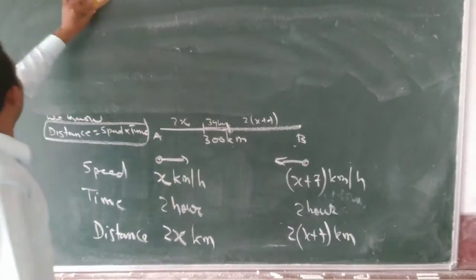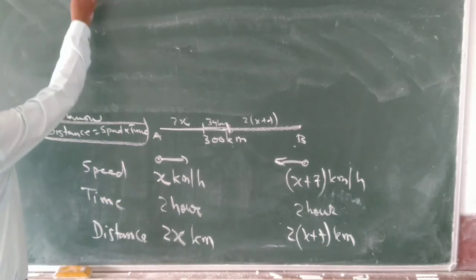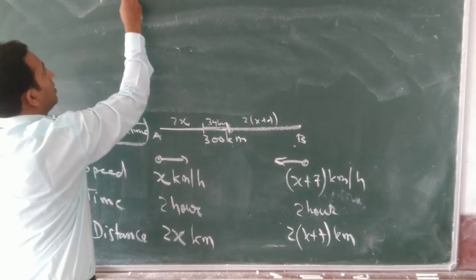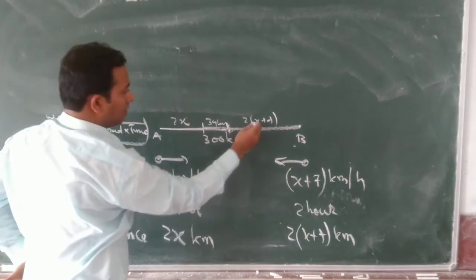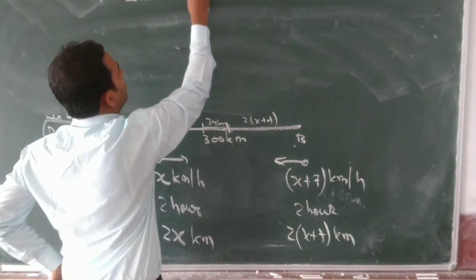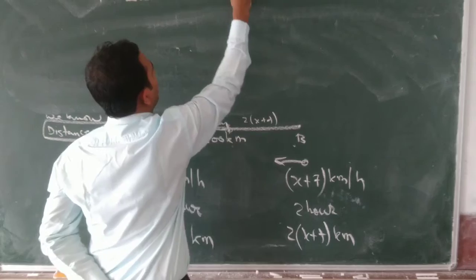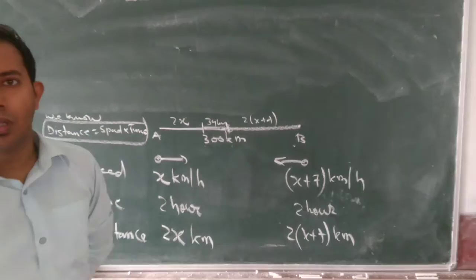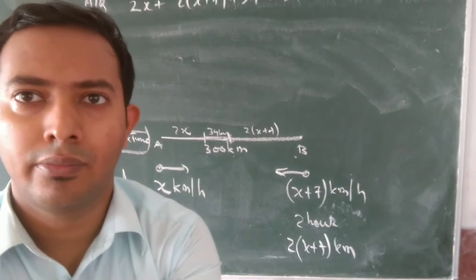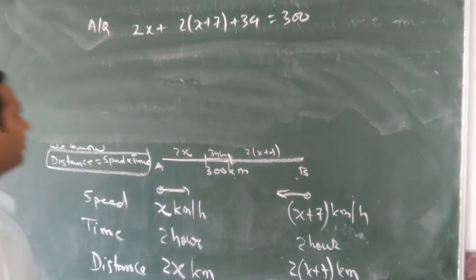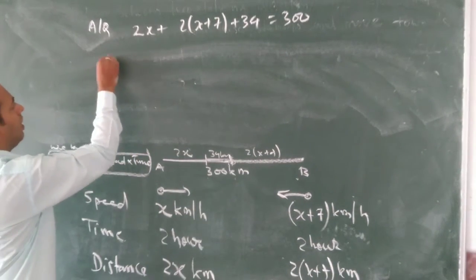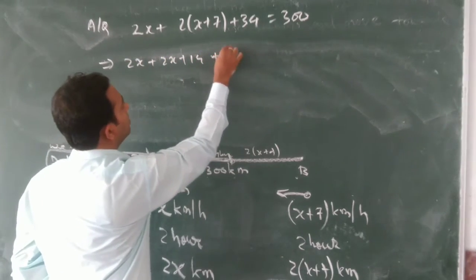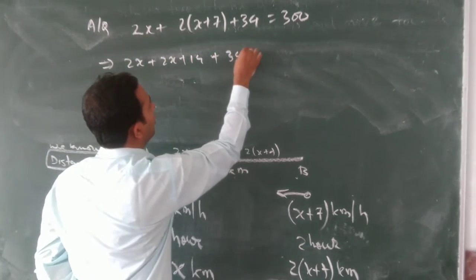According to the equation, we can write: 2x plus 2(x plus 7) plus 34 equals 300. This is our linear equation. Expanding: 2x plus 2x plus 14 plus 34 equals 300.